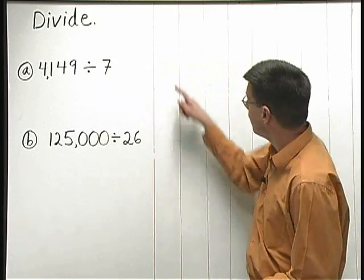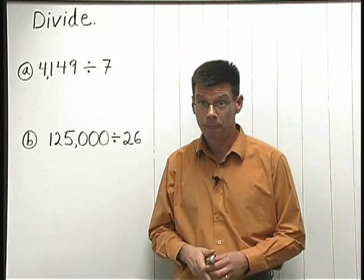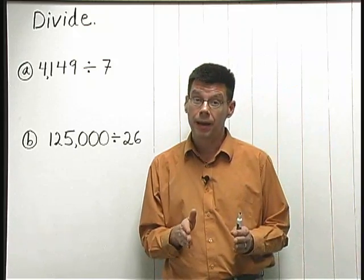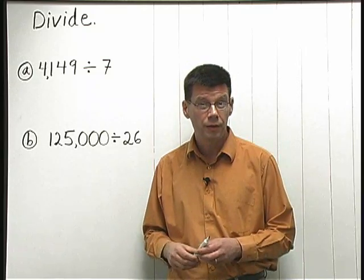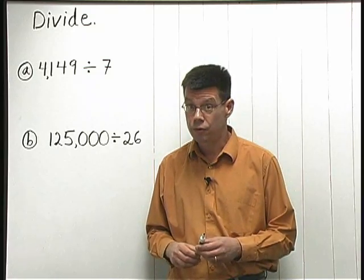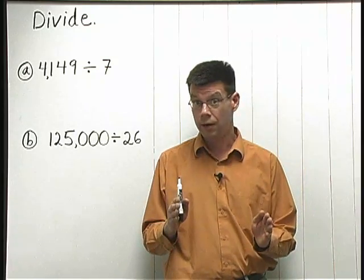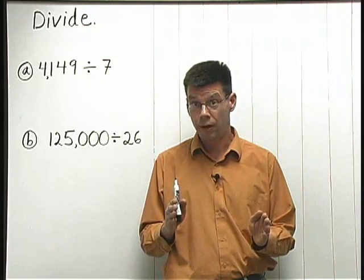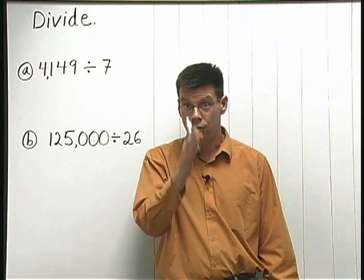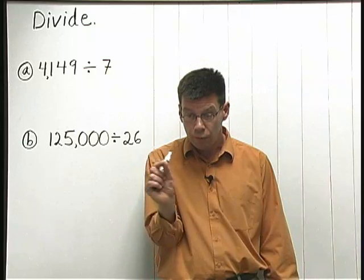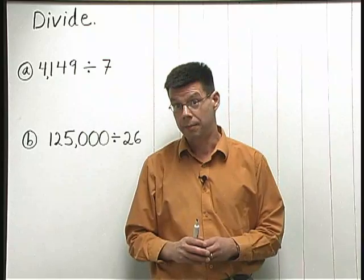You might notice that I've drawn some vertical lines on the whiteboard. They're to help me keep my columns lined up as I go through the long division process. You might want to do something similar when you do your own problems. I suggest you take a regular sheet of binder paper and turn it sideways, so the blue lines go up and down and your columns stay lined up.